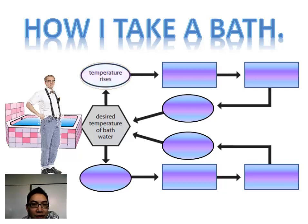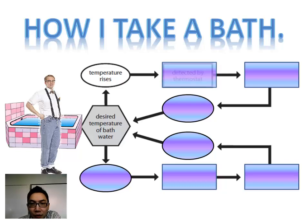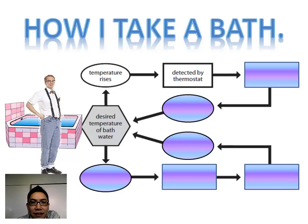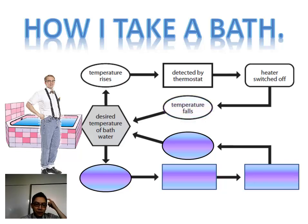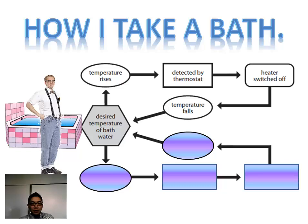If the temperature gets higher than 40 degrees, then my bathtub thermostat will detect this temperature rise and will turn off the heater or stop producing hot water. The temperature will fall and return back to my desired temperature — 40 degrees. That's pretty smart.